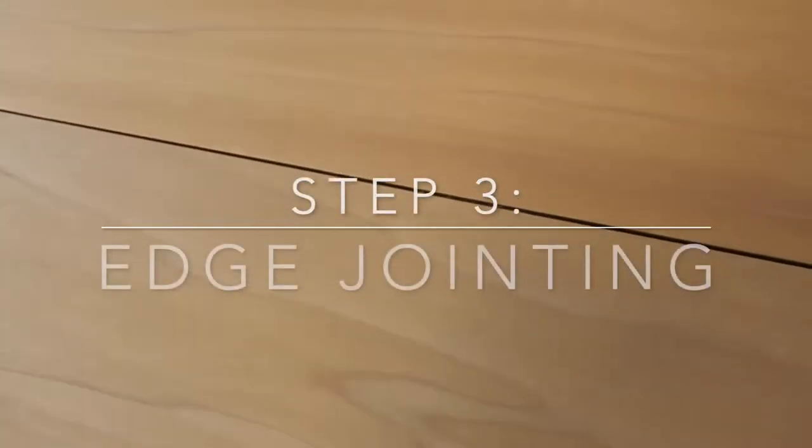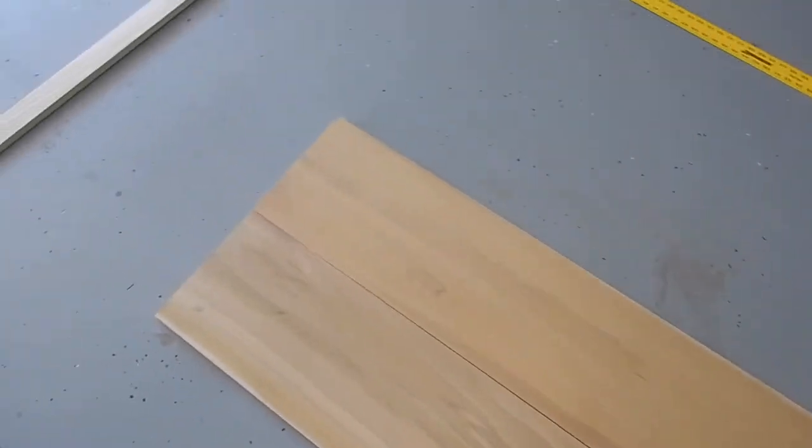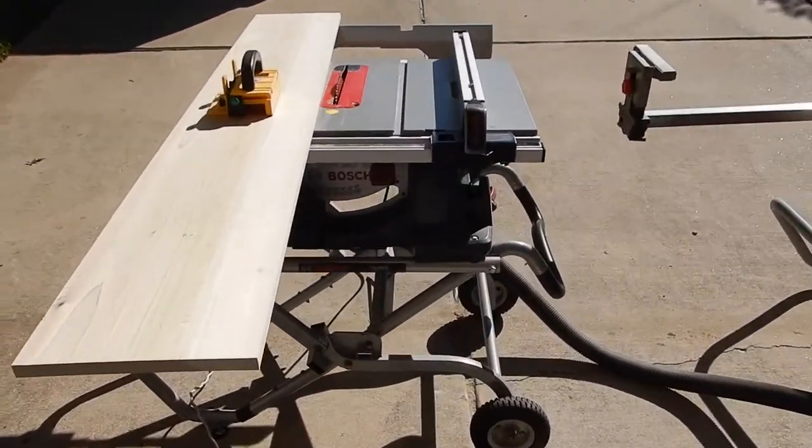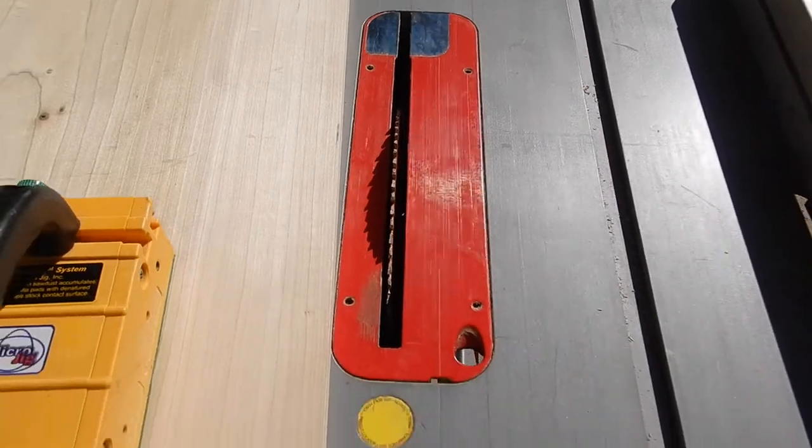Step 3 is edge jointing. Just like the ends of the planks are not square, sometimes the sides are not square. As you can see when I mate these two up, they don't mate perfectly. That is no bueno. So what I do is I take my table saw, I take each plank, I make sure I get the exact same width on each plank using the table saw, and then I begin running or ripping each piece through the table saw to get them all perfectly flat, perfectly straight on both ends.